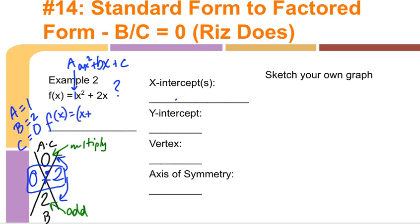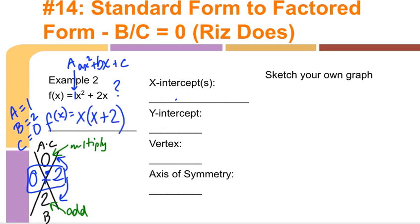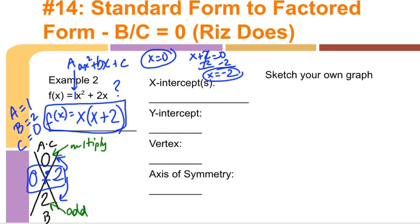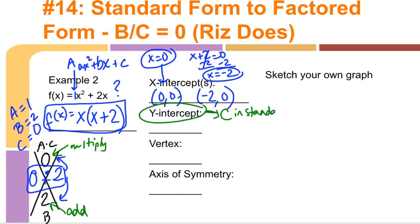If you want to multiply to 0, you just need 0 and some other number. 0 and 2 multiply to 0 and add to 2. So the factors are 0 and 2. You could write (x + 0)(x + 2), but x + 0 is just x, so the factored form is x(x + 2). Setting each factor to 0: x = 0 and x = -2. The y-intercept is C = 0, so (0, 0).